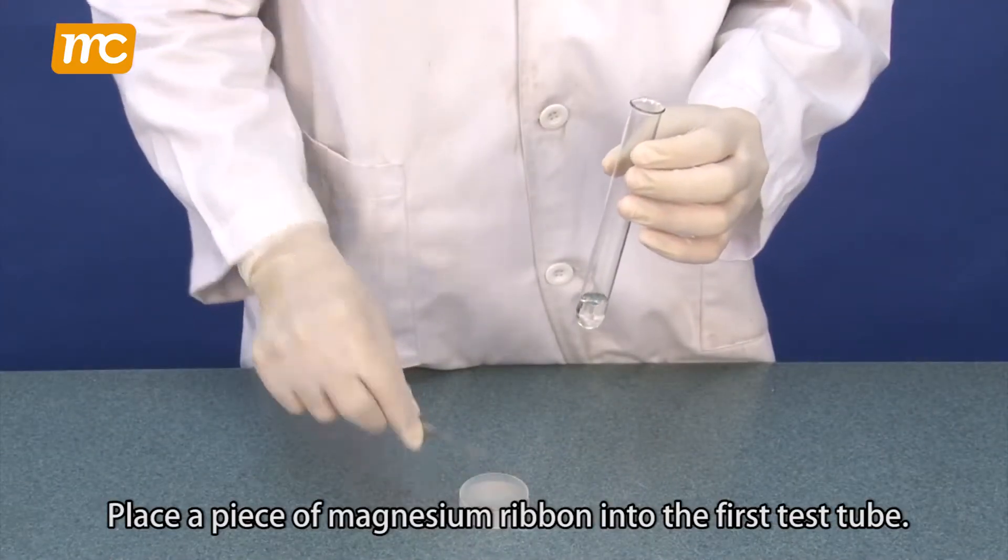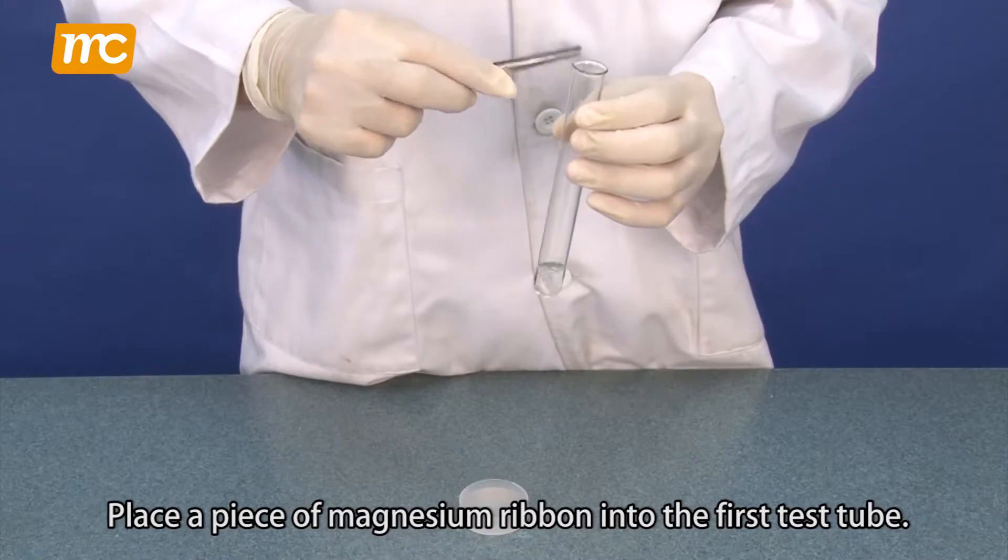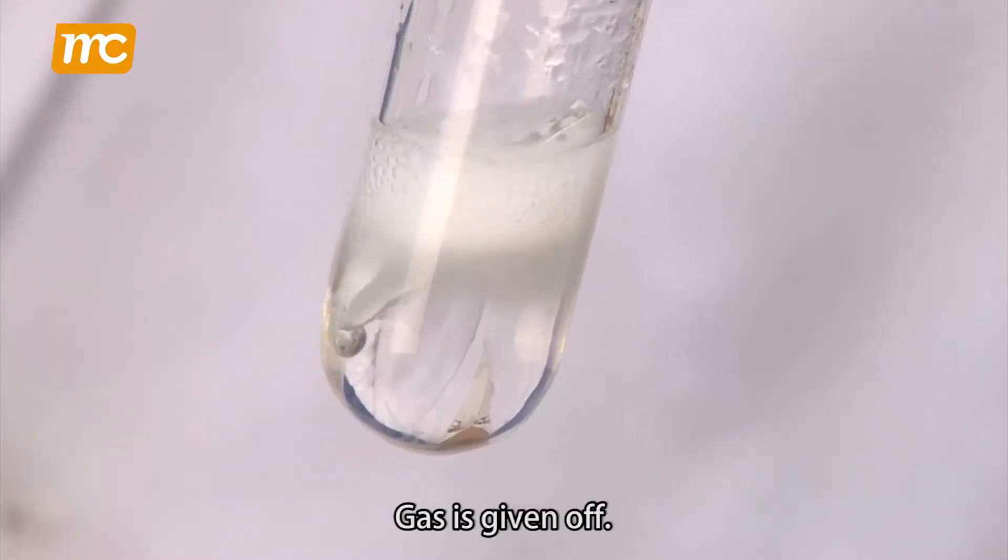Place a piece of magnesium ribbon into the first test tube. Gas is given off.